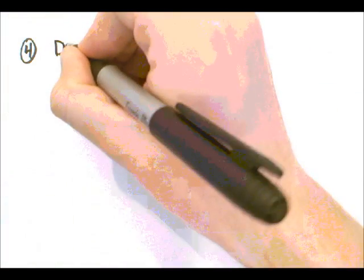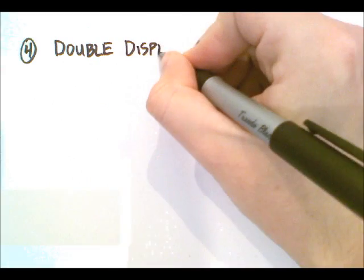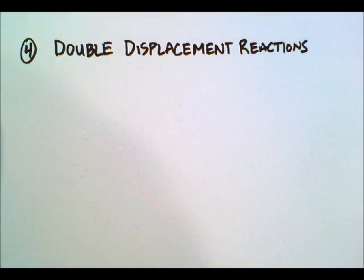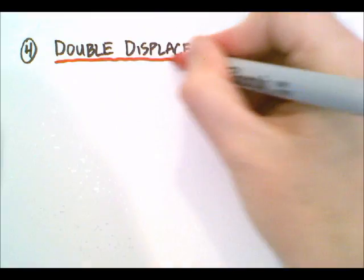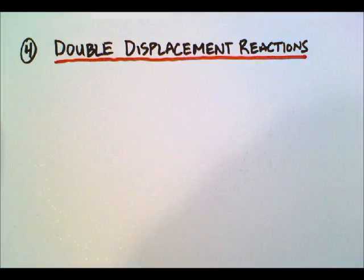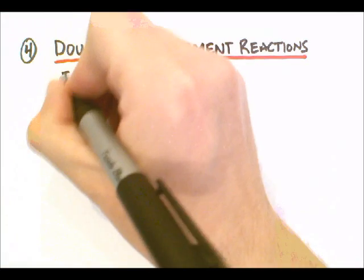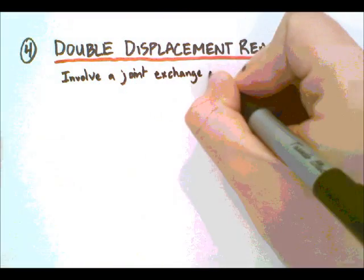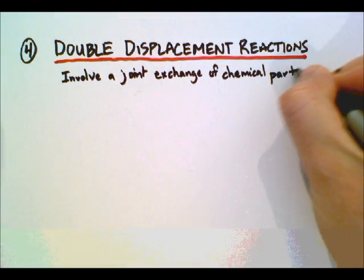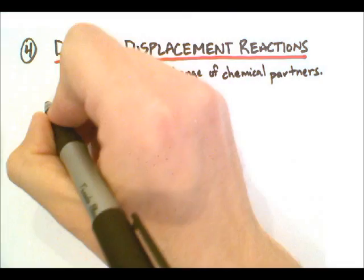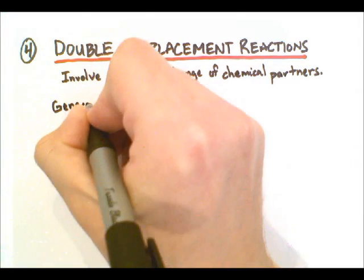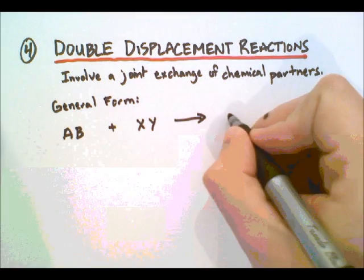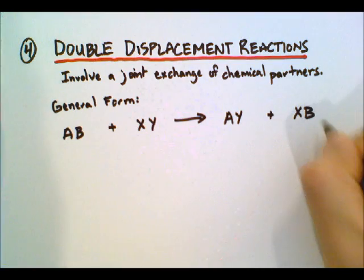Our fourth reaction is the double displacement reaction. Single displacement was switching one part; double displacement is different. In this case, we have two compounds involved and we switch out the metals in each one — it involves a joint exchange of chemical partners. In single displacement we had a metal and an ionic compound or a non-metal and ionic compound. Here we have two ionic compounds: AB plus XY produces AY and XB — our metals swap places.